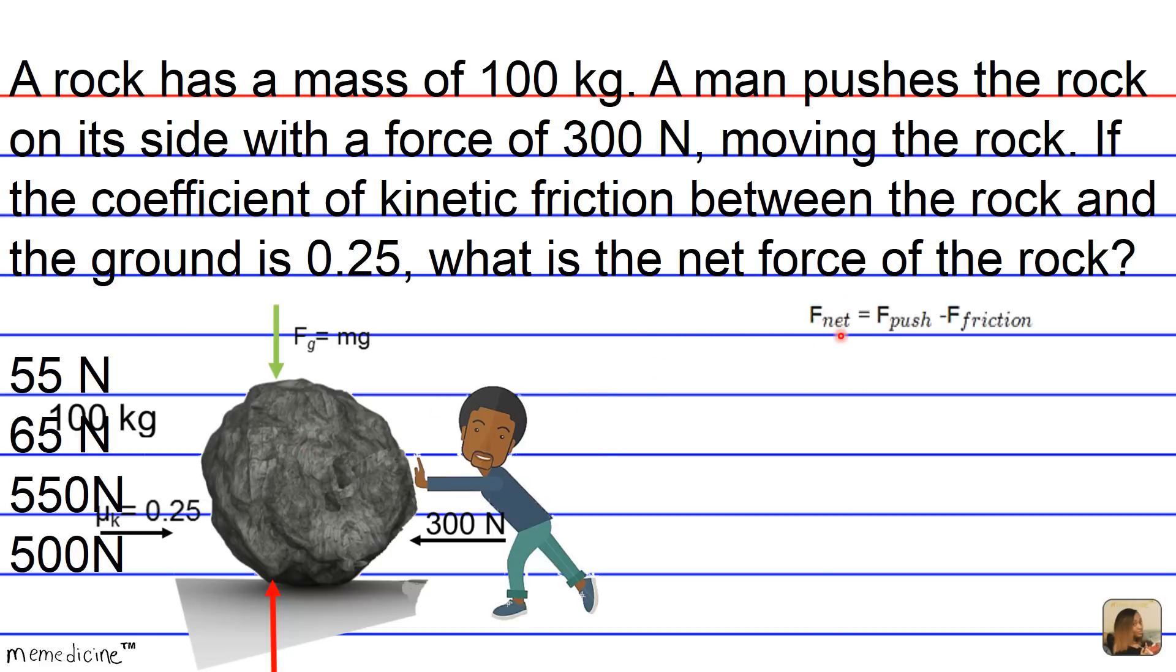F net, the net force we're looking for, is going to be F push where the direction to the left is designated as the positive direction minus F friction where the direction to the right is designated as the negative direction.